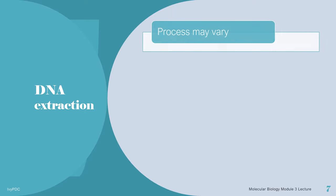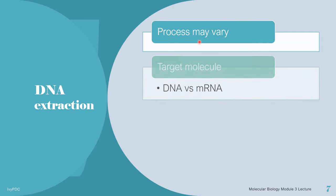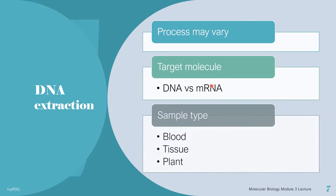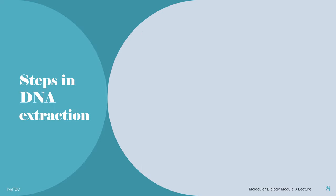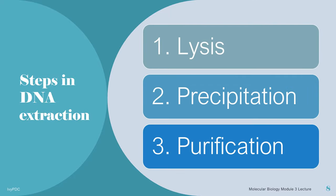The process of DNA extraction may vary depending on many factors like target molecule or sample type. For example, genomic DNA extraction procedures may differ from procedures to extract mRNA or plasmid extraction procedures. Also, the extraction of genomic DNA can diverge in techniques according to the sample type, such as blood or tissue. But in general, there are three basic steps involved in DNA extraction: lysis, precipitation, and purification.